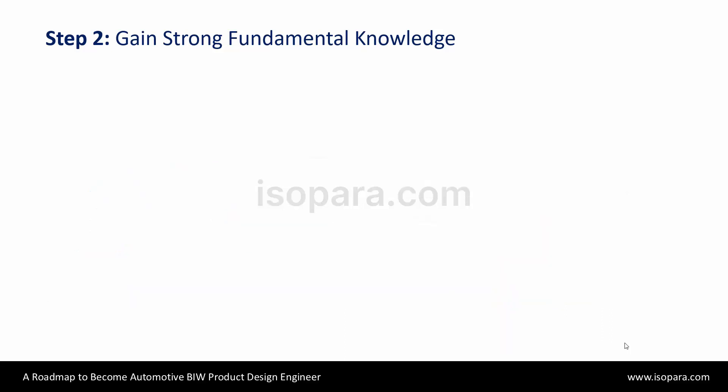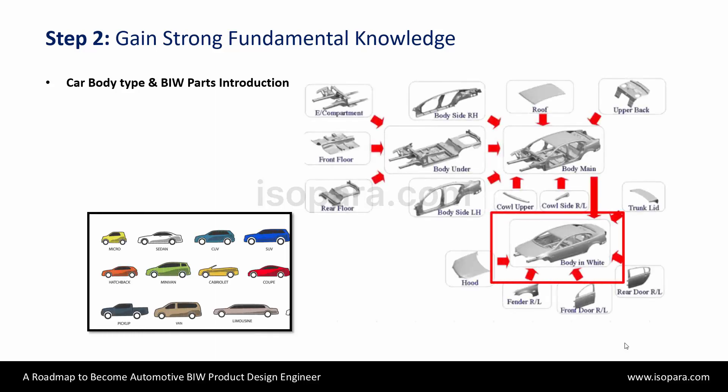Here, you have to learn what are the different body types and BIW parts. You will see various car body types, from micro to hatchback to pickup. You will learn about key parts in a BIW like the body side, roof, hood, fender, doors, etc.